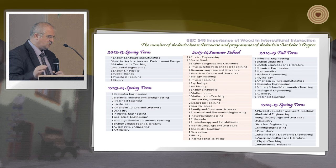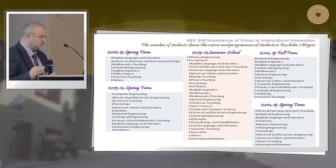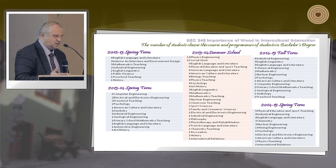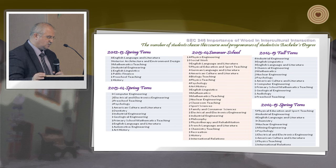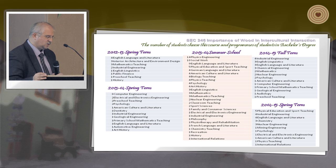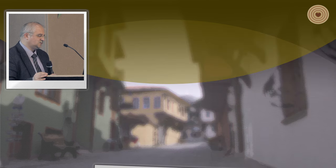These are the departments and fields from which students are choosing this course. There are many different fields represented. Students from various backgrounds are curious to find out what wood is and its importance in their own field. These include computer engineering, American culture and literature, classroom teaching, sports sciences, audiology, industrial engineering, chemistry, and many others — far beyond wood science itself.